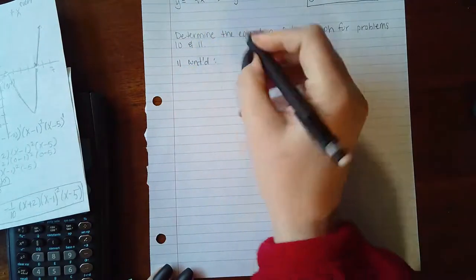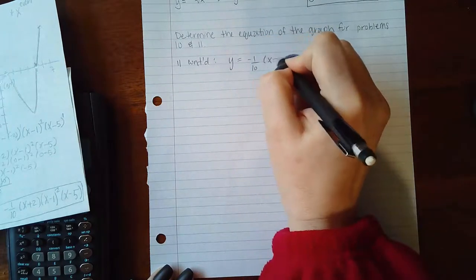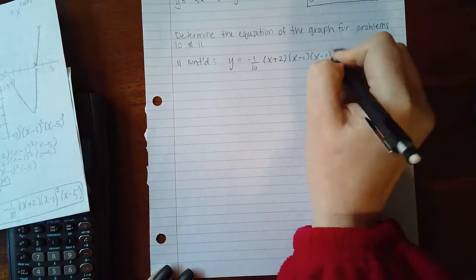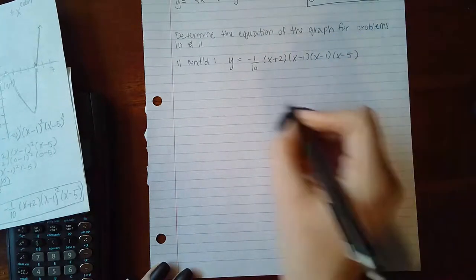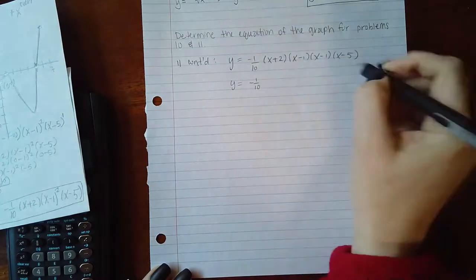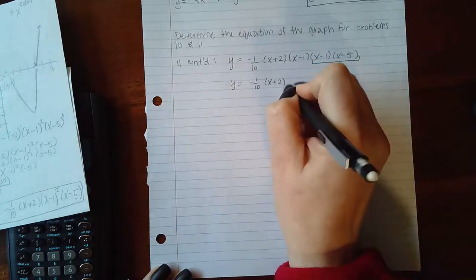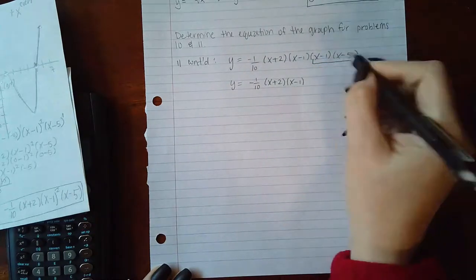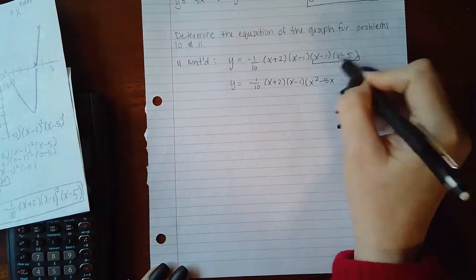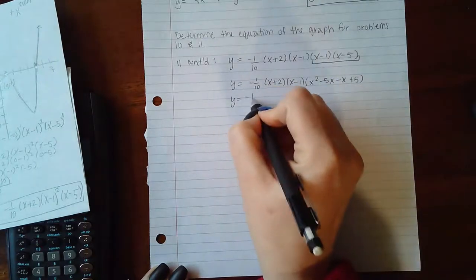I'm going to come over here and continue with number 11. What I'm going to do is take my equation and start to expand it. Instead of x minus 1 squared, I'm going to write x minus 1 times itself. I'm going to start multiplying everything out, going from back to front. When I foil this out, I get x squared minus 5x minus x plus 5, or in other words x squared minus 6x plus 5.